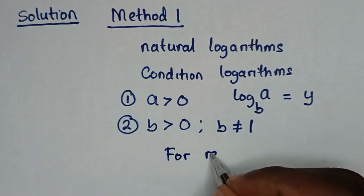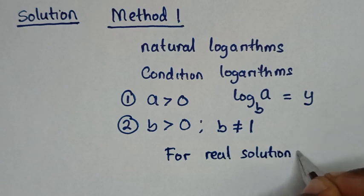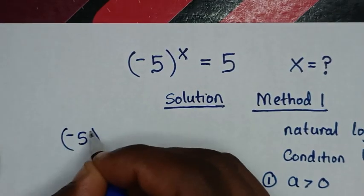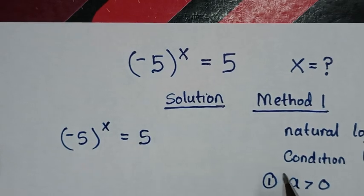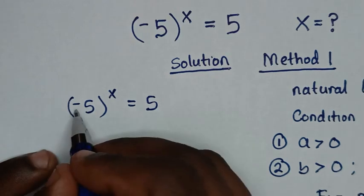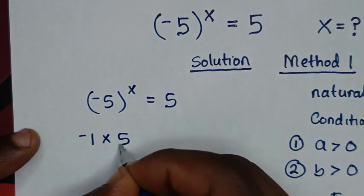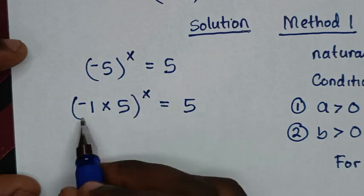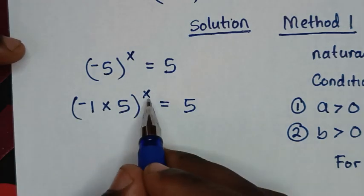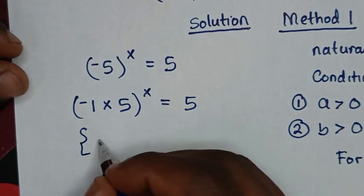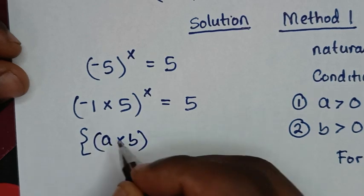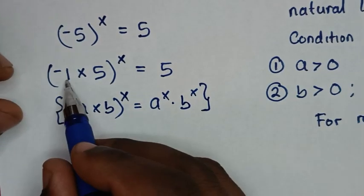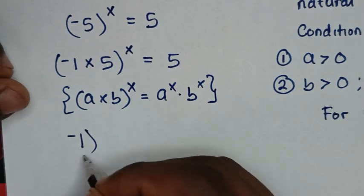Back to our problem: negative 5 bracket raised to power x is equal to 5. Using natural logarithms in Method 1, negative 5 is the same as negative 1 times 5, bracket raised to power x, equals 5. We'll apply the rule: a times b, bracket raised to power x, equals a to the power x times b to the power x. So it will be negative 1 to the power x, times 5 to the power x, is equal to 5.